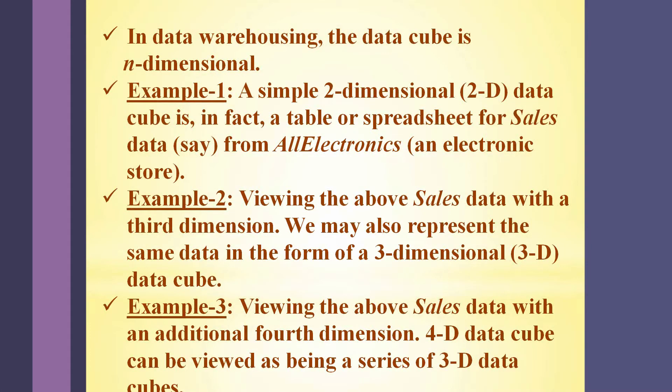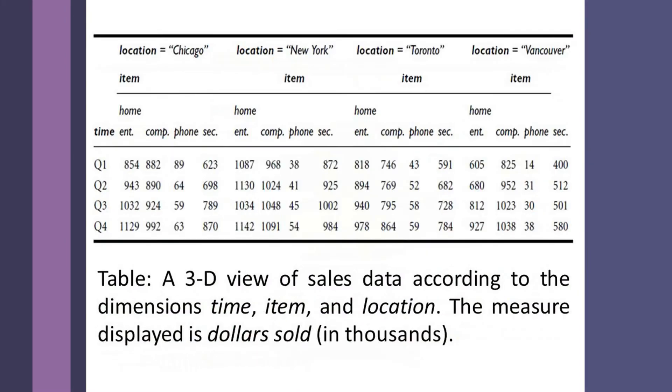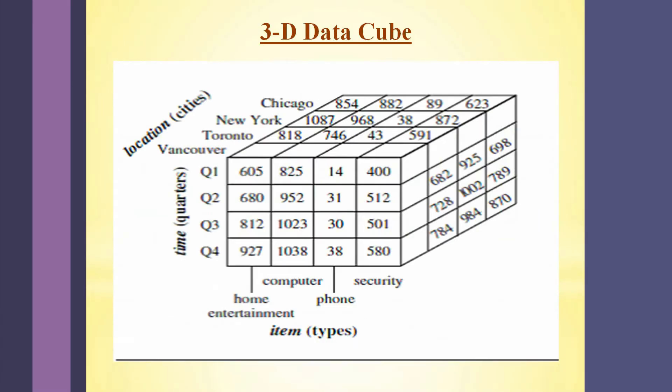Now let us move on to three-dimensional data. In order to do so, a third dimension has to be introduced. A three-dimensional data can be viewed in the form of a data cube. In this example, a third dimension has been introduced — the dimension location — consisting of Chicago, New York, Toronto, and Vancouver. One important thing to note is that a data cube does not store detailed information; it usually summarizes the data, and each cell in a data cube stores some aggregate or summarized measure.